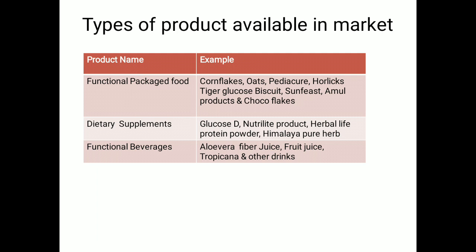The types of products available in the market include: first, functional packaged food — examples are cornflakes, oats, Pediasure, Horlicks, tiger glucose biscuit, Sunfeast, Amul products, and Chocoflex; second, dietary supplements — examples are Glucose-D, Nutrilite products, Herbalife protein powder, and Himalaya Pure Herbs; and third, functional beverages — liquid formulations such as aloe vera fiber juice, fruit juice, Tropicana juice, and other drinks.